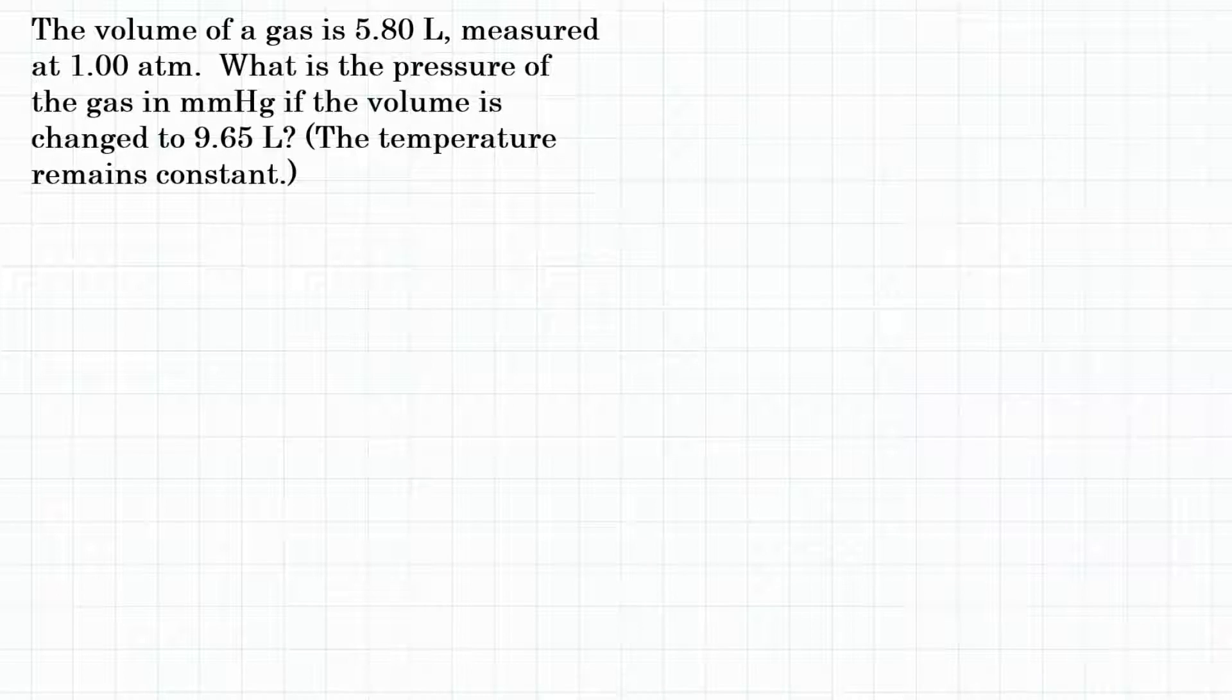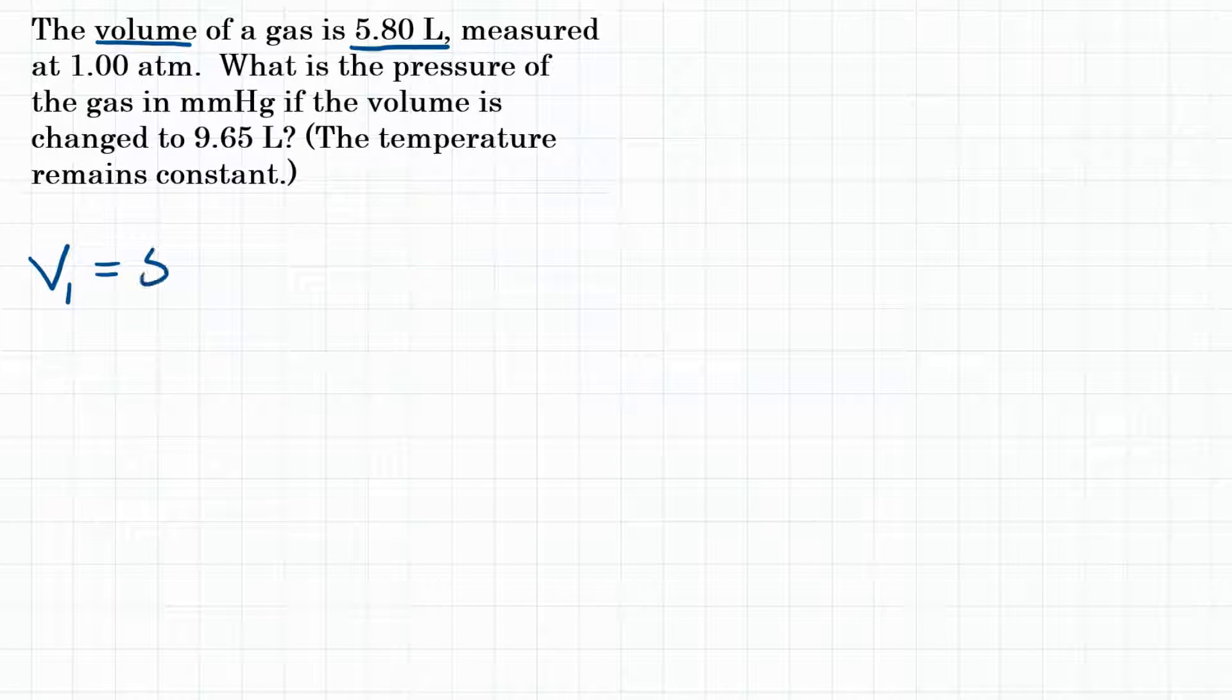Okay, so let's look at everything the problem gives us. We have a volume of gas that is 5.80 liters. So volume, and let's say V1 for volume at time 1, that equals 5.80 liters. And that was measured at 1.00 atm, so we have a pressure at that same time that is 1.00 atm.